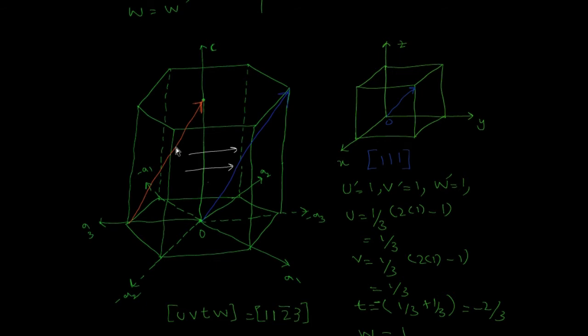So first, our four indices u, v, t, and w depend on u', v', and w', which are the indices in the three-dimensional system. We will first ignore a3 and find u', v', and w'. For that, we shift the direction to start from origin O and end at this corner.